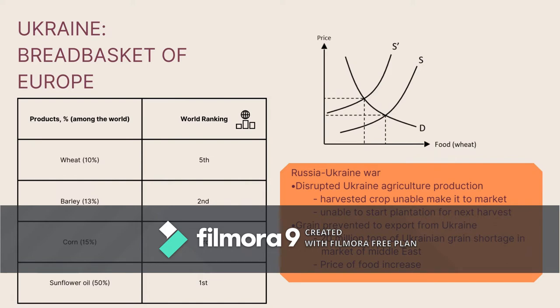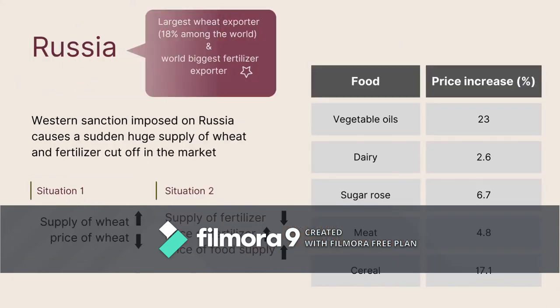This can be shown with the graph above. Western sanctions imposed on Russia's exports are the main serious cause of deteriorating the whole situation, as Russia is the largest wheat exporter and biggest fertilizer exporter in the world. Russia was prevented from exporting fertilizers, causing a sudden huge supply cutoff in the market which resulted in a shortage. Therefore, the price of fertilizers rose, making worldwide food supply more expensive.